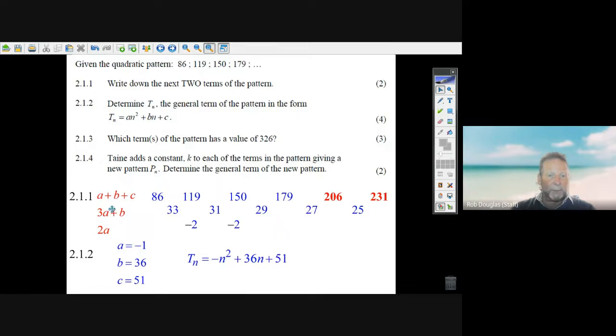Here, 3 times minus 1 plus b equals 33. Well, you add 3 to both sides of that equation and you get b is 36. Then you put minus 1 in for a, 36 in for b, you get 35. You take that away from 86 and you get 51. Now that you know a, b, and c.